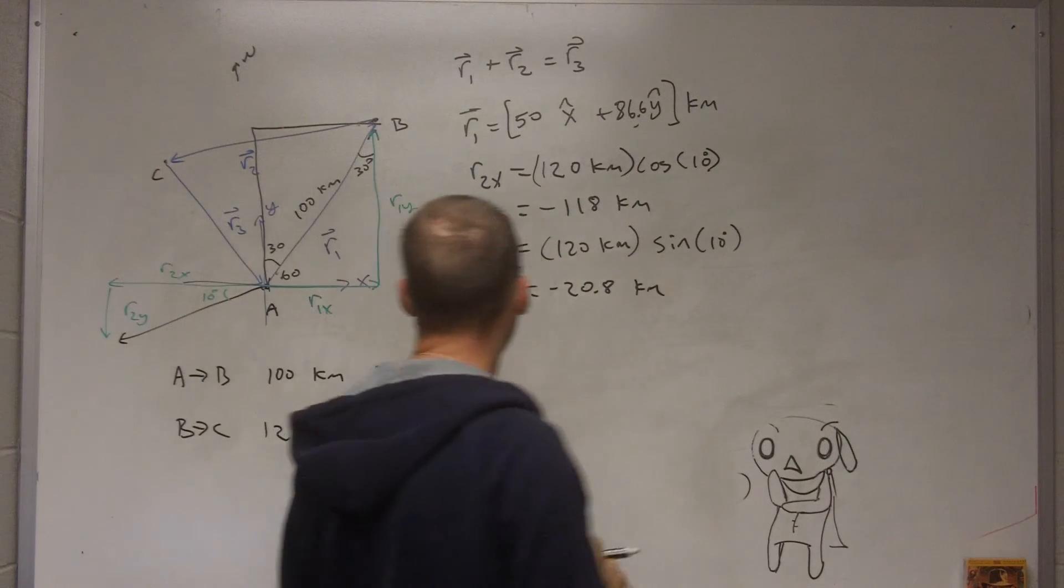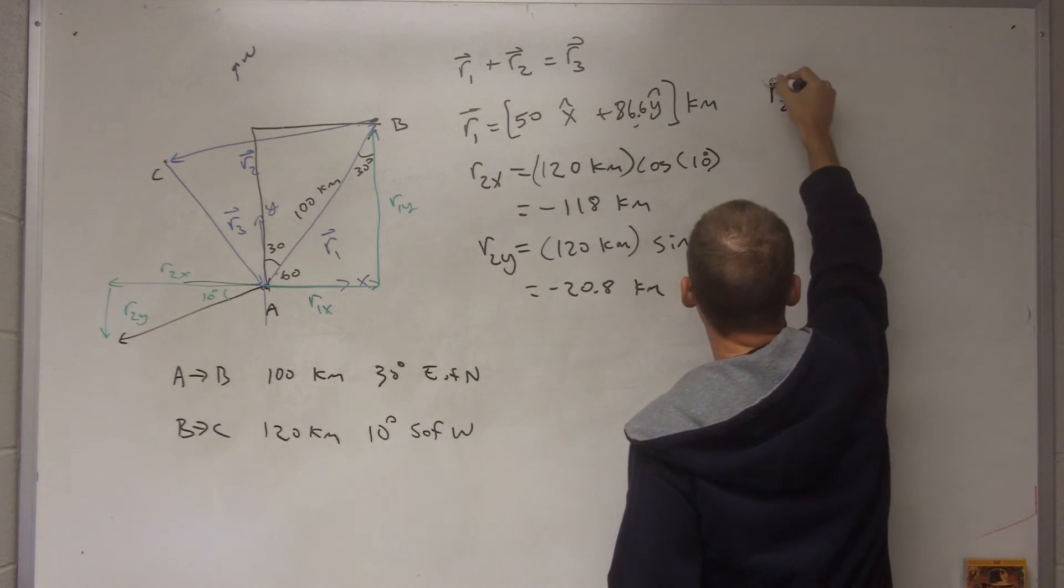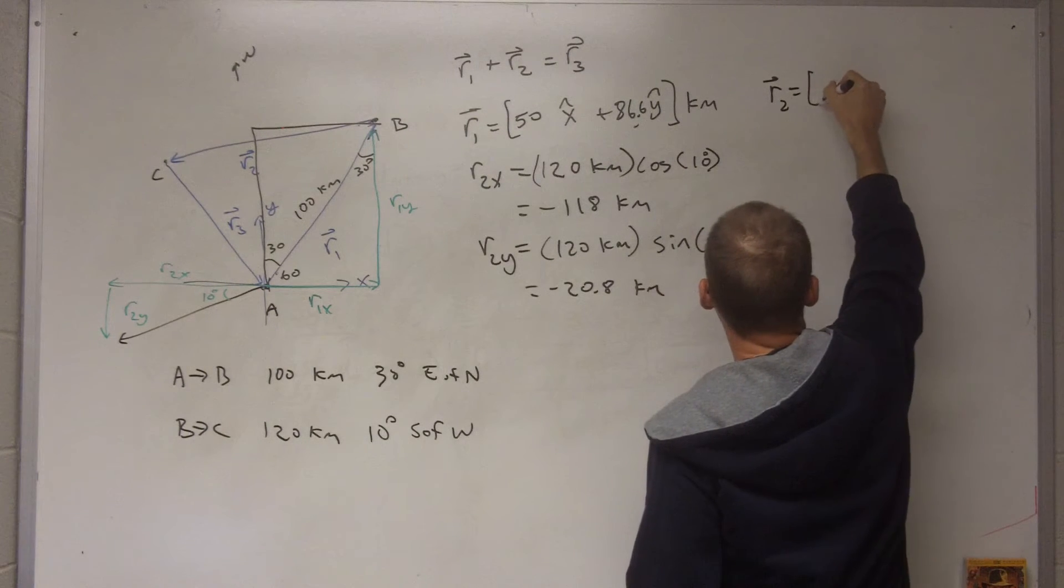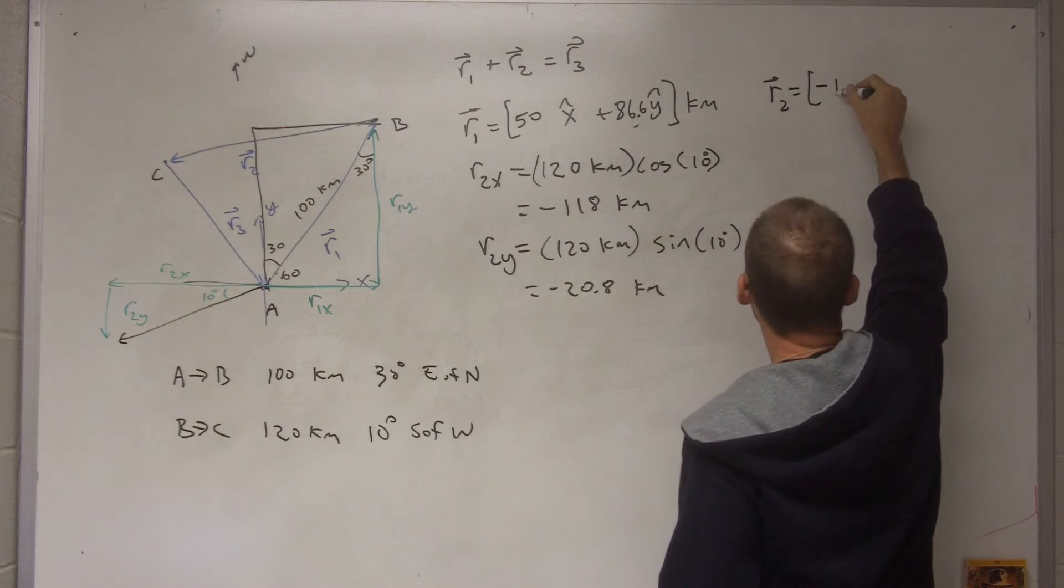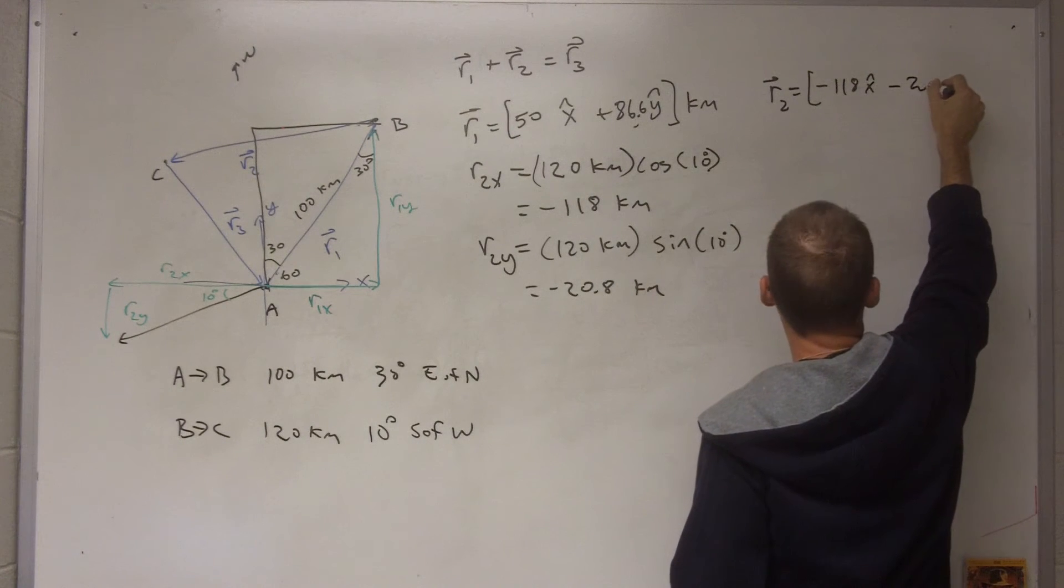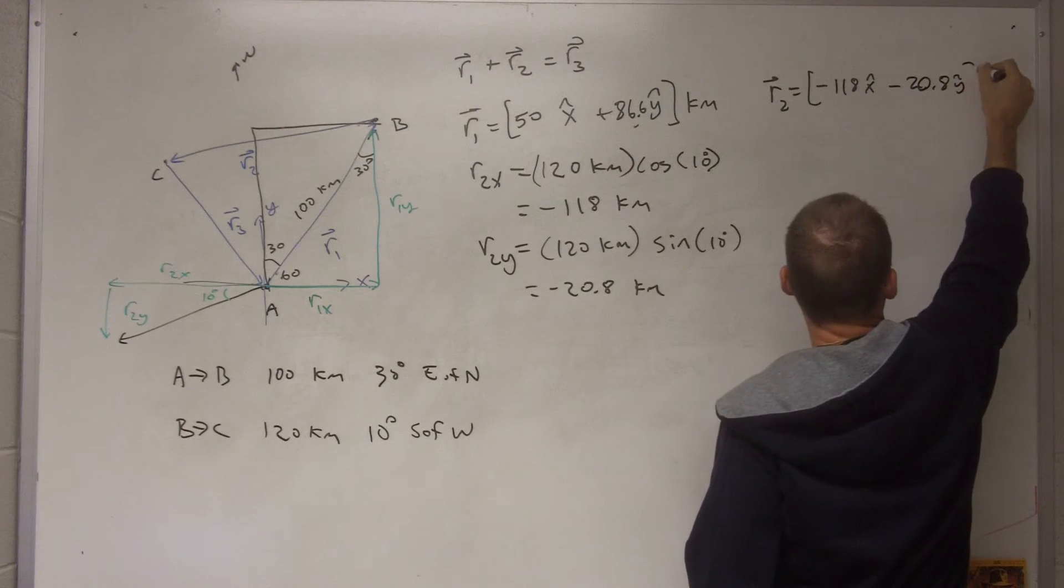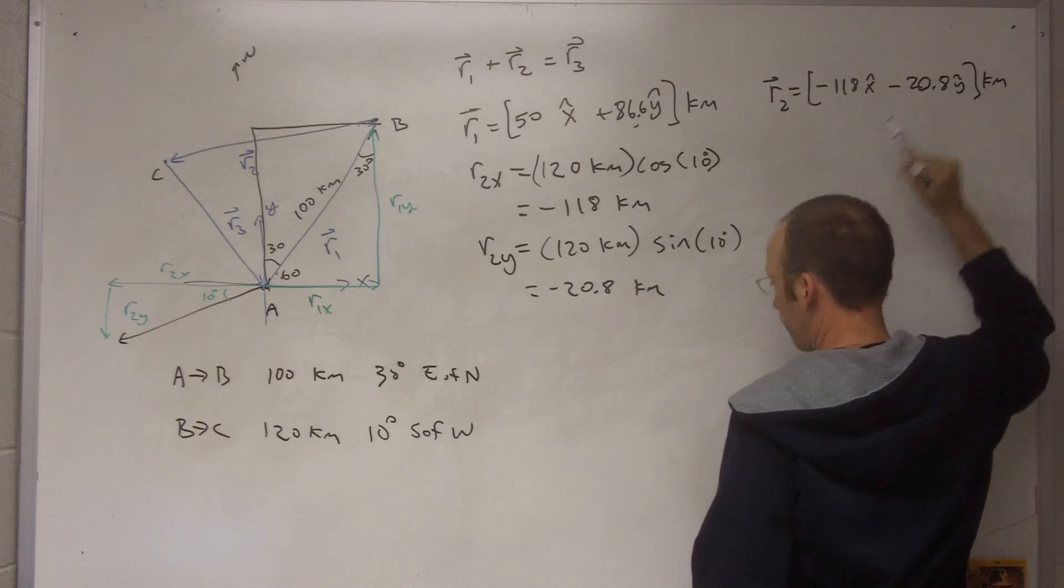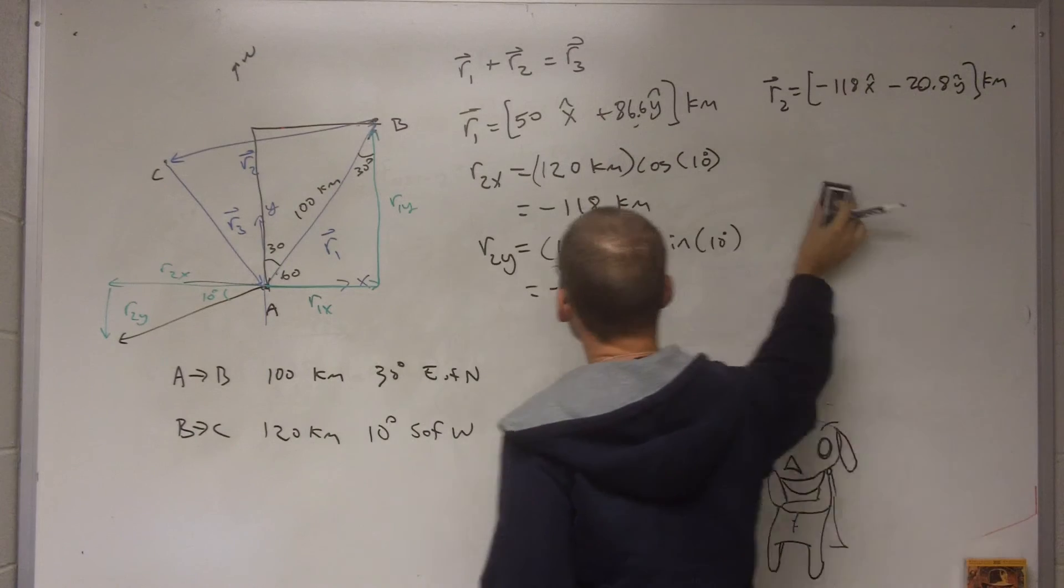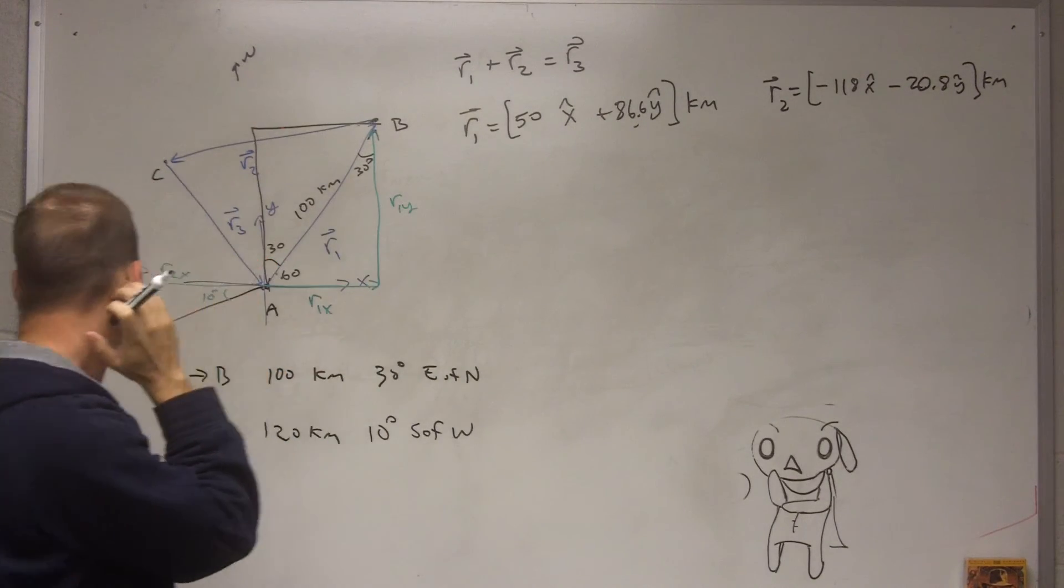Negative kilometers. So r2, I'll move right up here, r2 the vector is going to be negative 118 x-hat minus 20.8 y-hat, and then I'll put the kilometers right there.